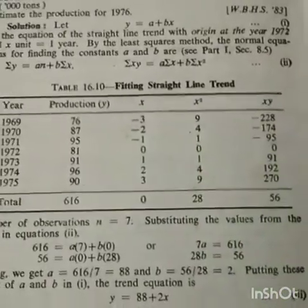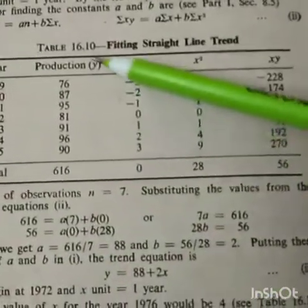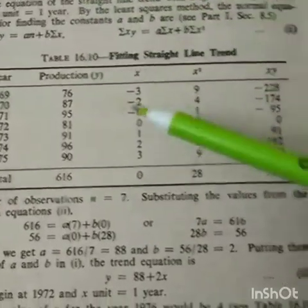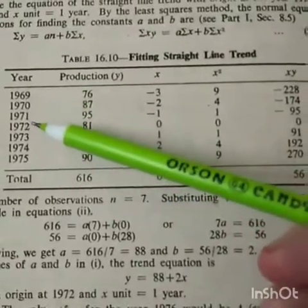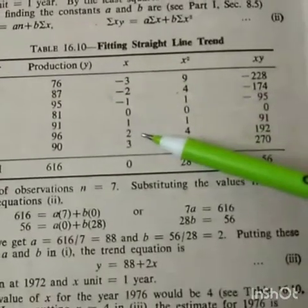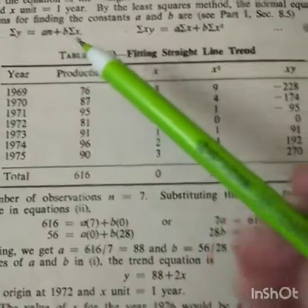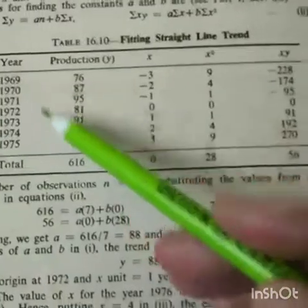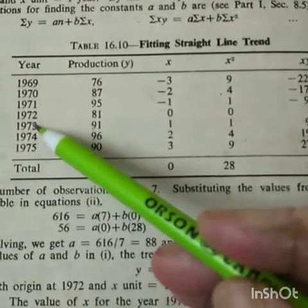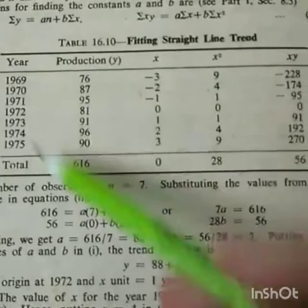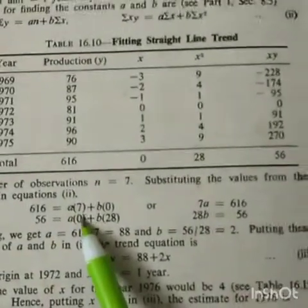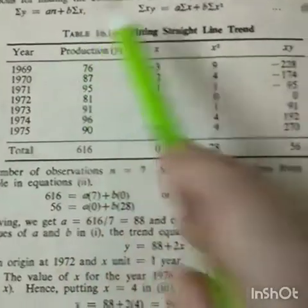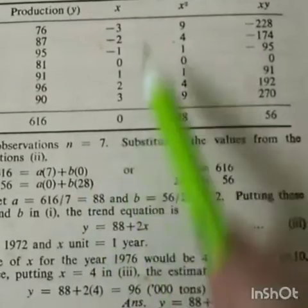These are the y values and x values. Productions are y values, and x values are the years. We have taken the base year and these are x values. Simply we have to calculate n. What is n? N is the number of observations - there are 7 years, so n equals 7. Then summation of y is 616, and summation of x is 0.